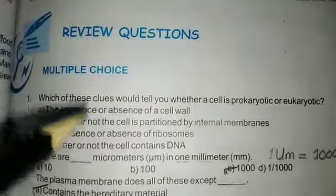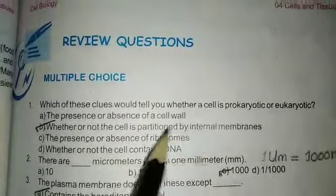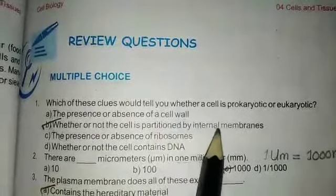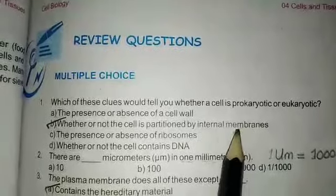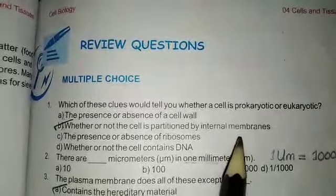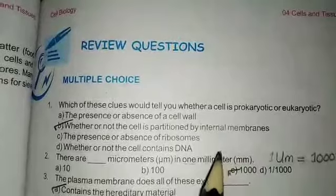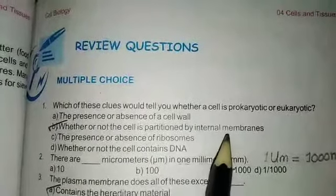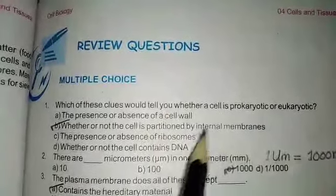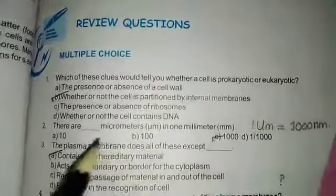The answer is B. B states that the cell is partitioned by internal membranes. In prokaryotic cells, the internal organelles are not membrane-bounded, whereas in eukaryotic cells they are. These are all the distinguishing features for question number two.